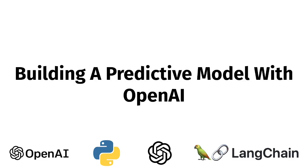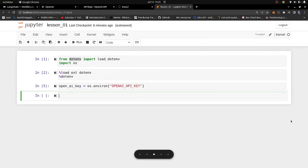In the last video we went ahead and did the environment setup, where we set up the development environment, installed Jupyter Notebook, and all that. If you haven't watched the last video, you can check it out where we went through the whole setup. In this video we're going to build on top of that knowledge by building a simple predictive model using OpenAI and LangChain.